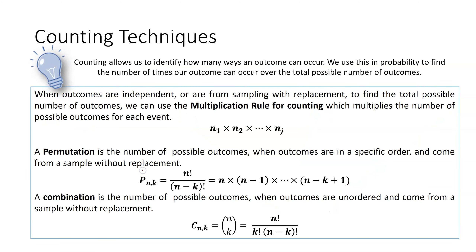We're finally at the very end using counting techniques. Some intro classes don't cover these, but it's really important to understand how many possible samples exist in some population. We have a multiplication rule for counting: if I want to know how many possible outcomes there are, I take the number of possibilities for the first object and continue from there.